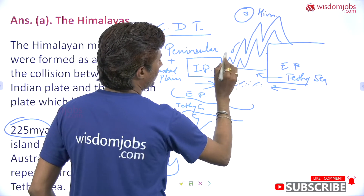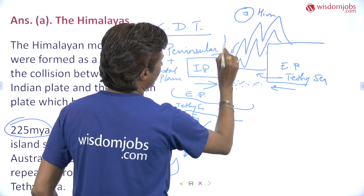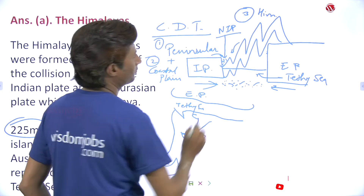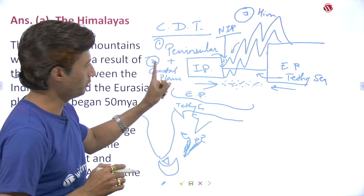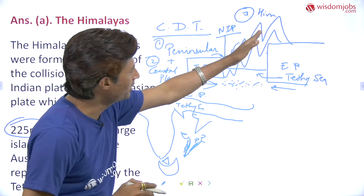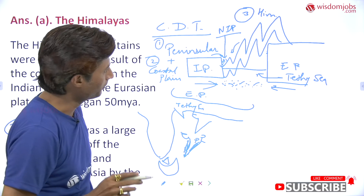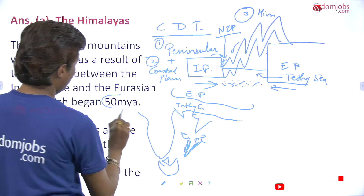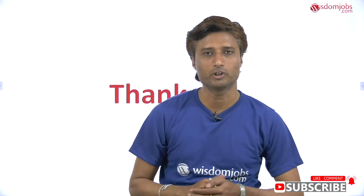The rivers flowing over the Himalayas and peninsular plateau deposited sediments, leading to the formation of the northern Indian plain. So the sequence is: first, the peninsular plateau formed; second, the coastal plain formed; third, the Himalayas formed — the collision began around 65 to 50 million years ago; and fourth, the rivers deposited sediments forming the northern Indian plain. This is a very important and tricky sequence regarding the formation of India's physiographic divisions.